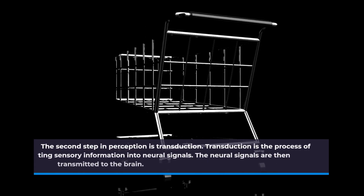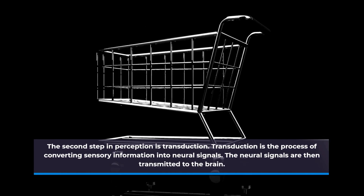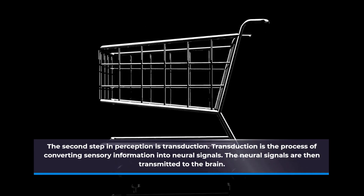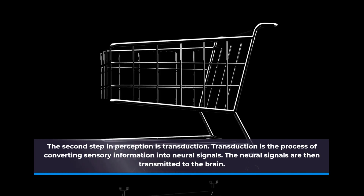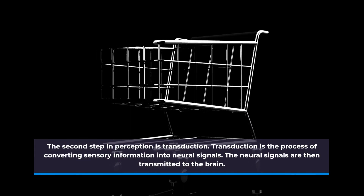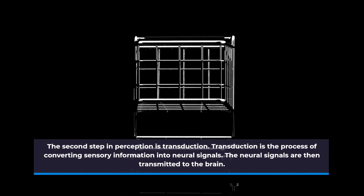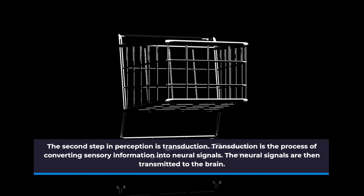The second step in perception is transduction. Transduction is the process of converting sensory information into neural signals. The neural signals are then transmitted to the brain.